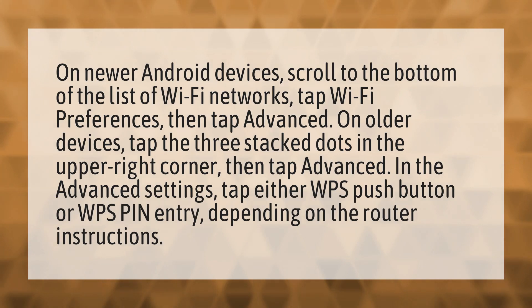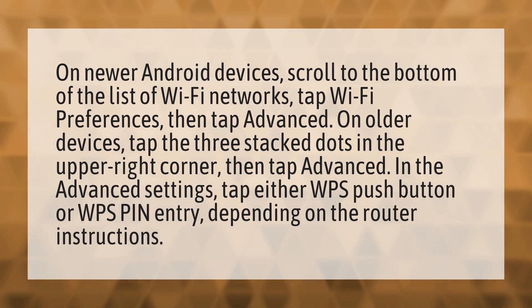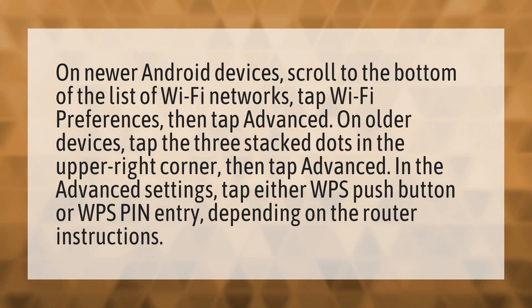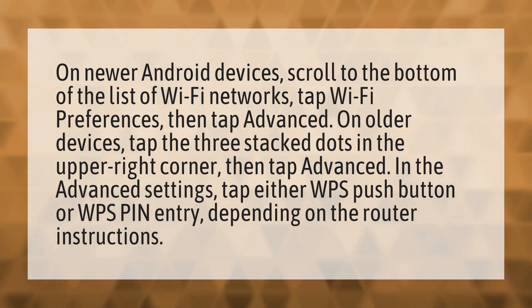On newer Android devices, scroll to the bottom of the list of Wi-Fi networks, tap Wi-Fi preferences, then tap advanced. On older devices, tap the three stacked dots in the upper right corner, then tap advanced.